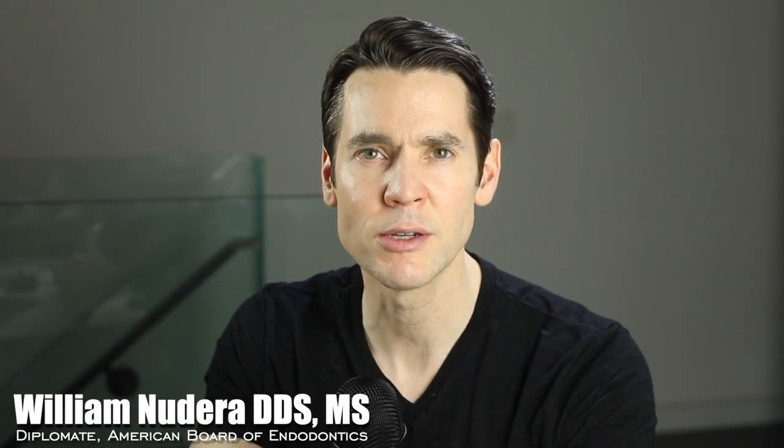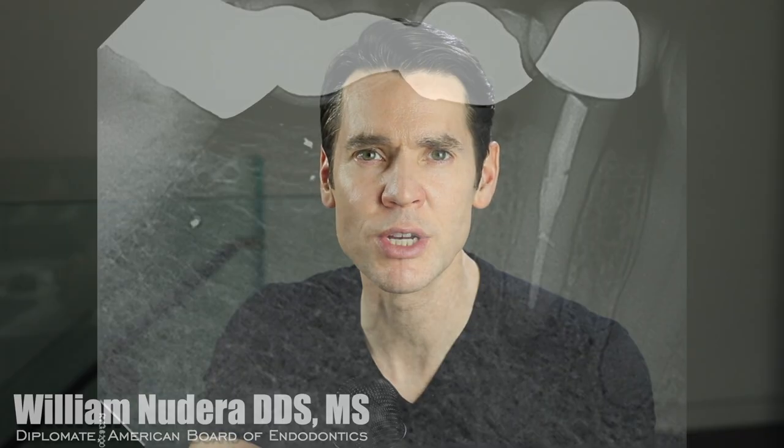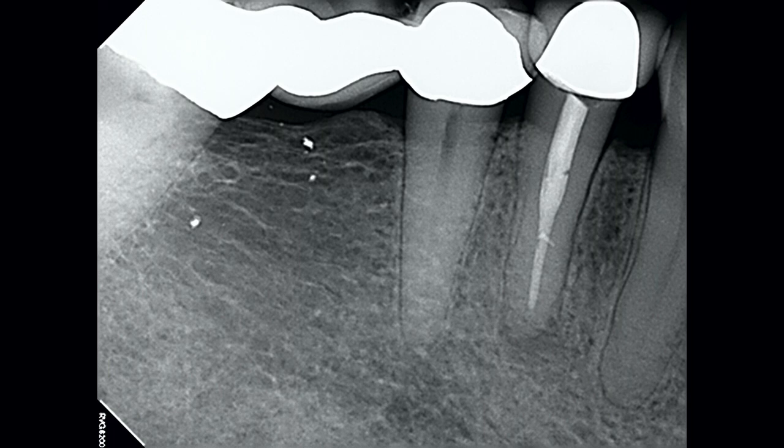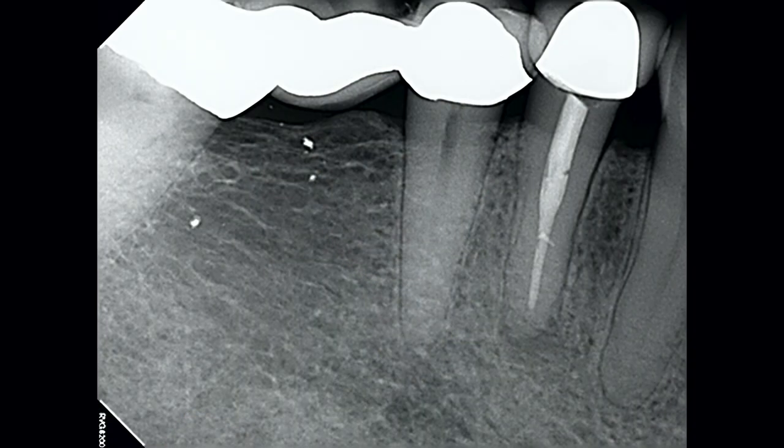Tooth number 28 was diagnosed with previously root canal treatment and symptomatic apical periodontitis. The original root canal treatment was completed somewhere within the last year. The patient had symptoms that never fully resolved, and recently the symptoms have been increasing. We see the prior root canal treatment ending a little bit short of the radiographic apex. Could be considered clinically acceptable, but a little short for my liking. There's an associated periapical radiolucency.